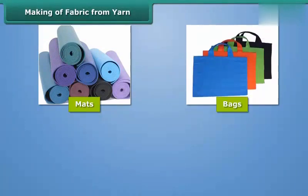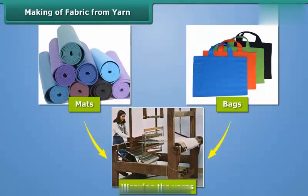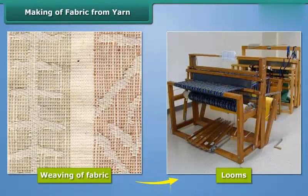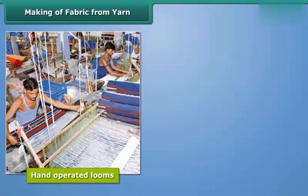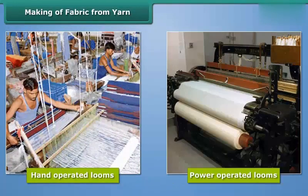Now let us know how fabric is made from yarn. Fabric is made by weaving and knitting the yarns. See these mats or these bags — they are made by weaving the yarns. Weaving of fabric is done on looms. Looms are of two types: hand-operated looms and power-operated looms. You can also make a mat with a few thin ropes. Take ropes of yellow and blue color and weave the yellow and blue strips one by one. Similarly, two sets of yarn are woven together to make a fabric.